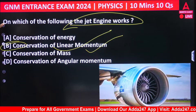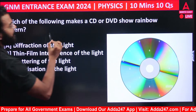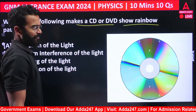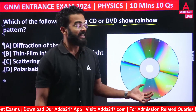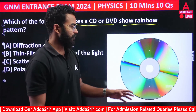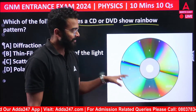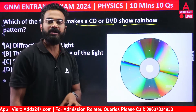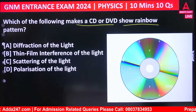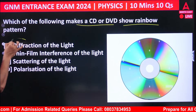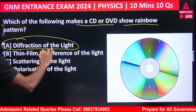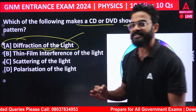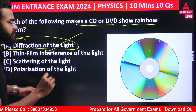Next question: which of the following makes a CD or DVD show a rainbow effect? When we look at a CD or DVD, it shows colors like a rainbow. This effect is called diffraction of light. So diffraction of light is the correct answer here.